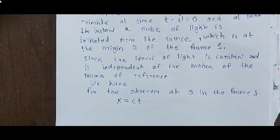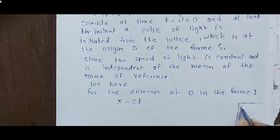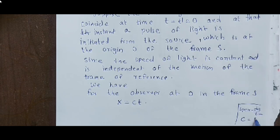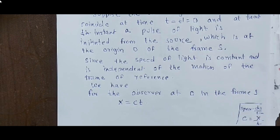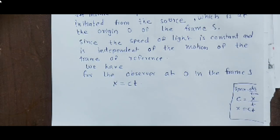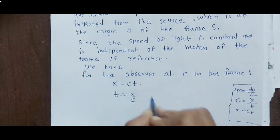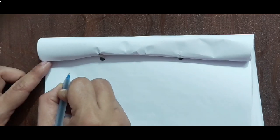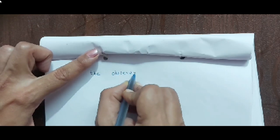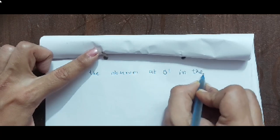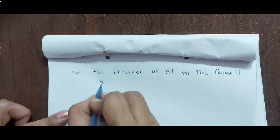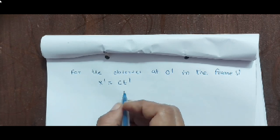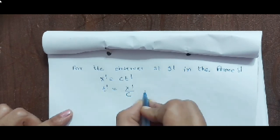For the observer at O in frame S: x = ct. We know that speed equals distance upon time; speed is c, distance is x, time is t, so x = ct, or t = x/c. This is equation 1. Now if the observer is in the O' frame, which is the moving frame, for the observer at O' in frame S': x' = ct', because c, the velocity of light, is constant. So x' = ct', or t' = x'/c. This is equation 2.